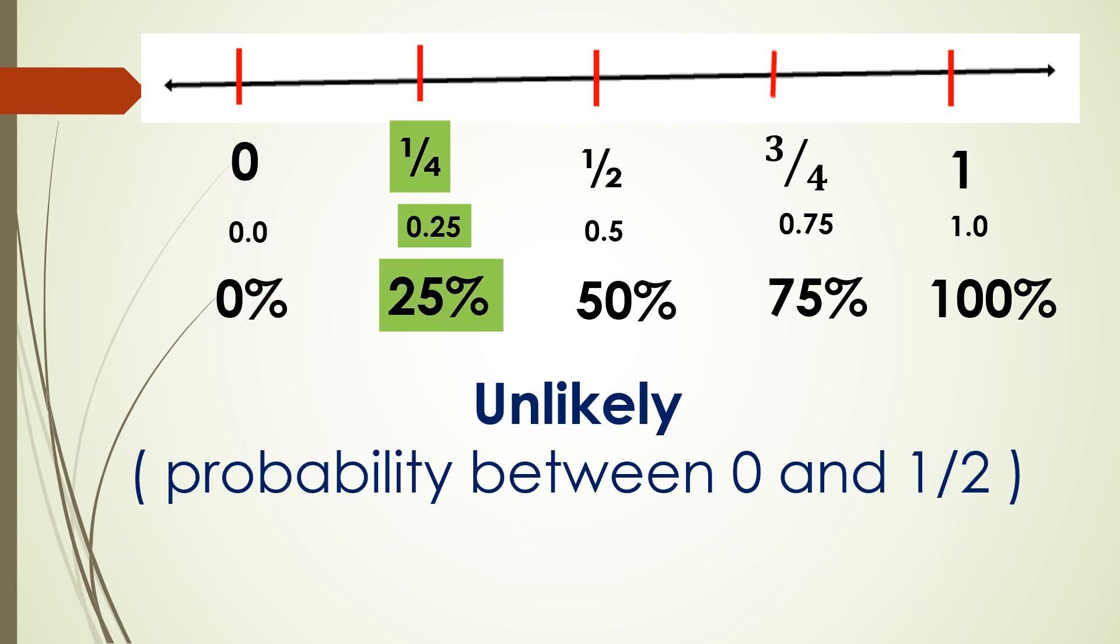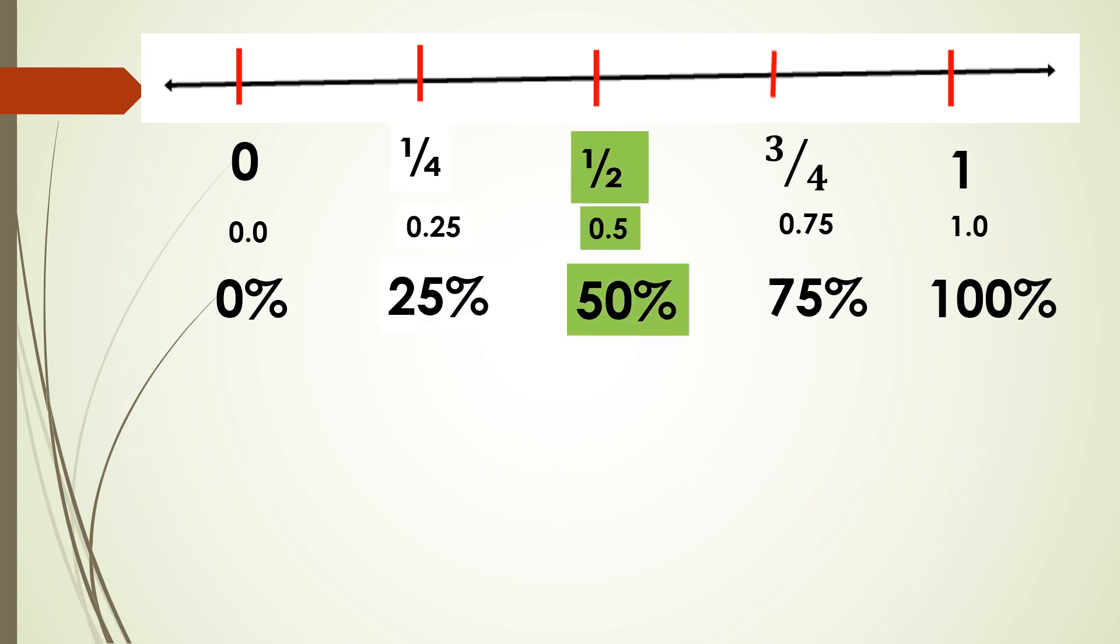The second term is unlikely. This is the probability between 0 and 1/2. In here, an event is not impossible to happen, but it has a very little chance.